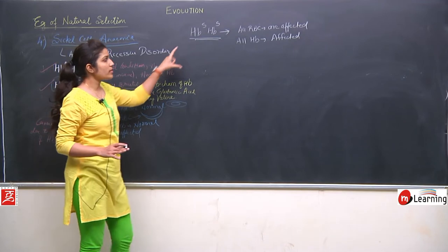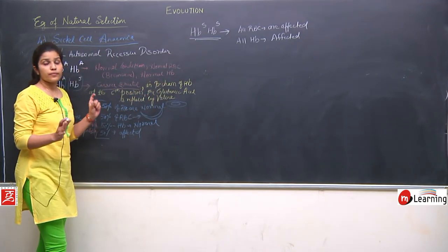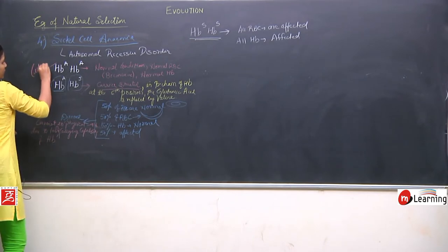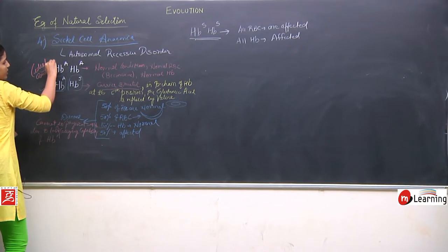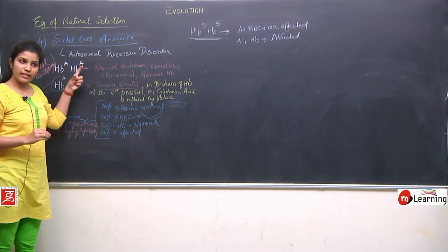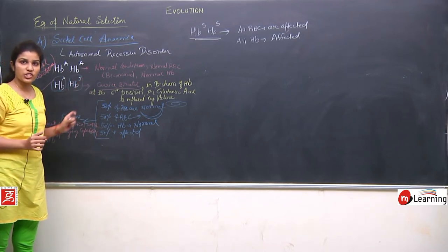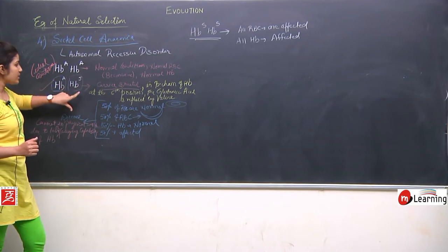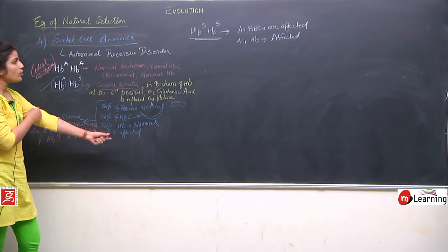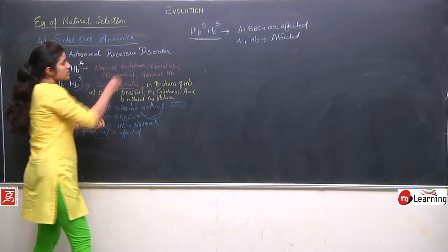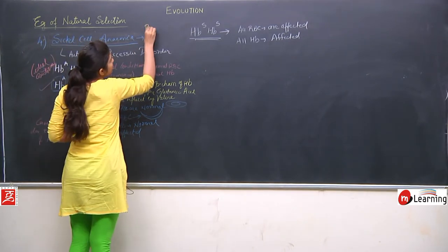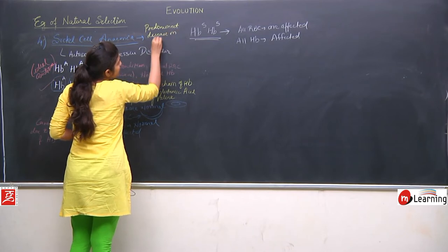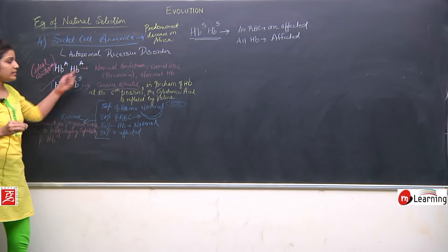These are the 3 conditions of sickle cell anemia. Theoretically, the normal condition should always be selected by nature as the best fitted species. But in Africa, where sickle cell anemia is a predominant disease, nature does not select the normal species — it selects the intermediate carrier one. This is because malaria is also a very common disease in Africa.